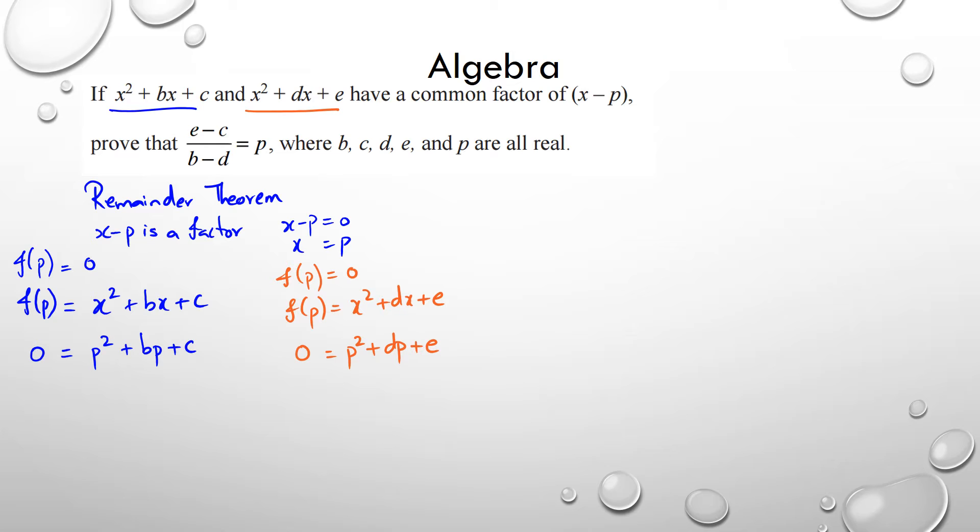So once I've actually proven both those functions equal zero, what I could do is I could say that the orange equation is equal to the blue equation, because they're both equal to zero. So what I have is p squared plus bp plus c, and that equals the orange equation, which is also zero. So p squared plus dp plus e. So from here, rearranging everything, both of my p squareds, they cancel out. So what I have is bp plus c equals dp plus e.